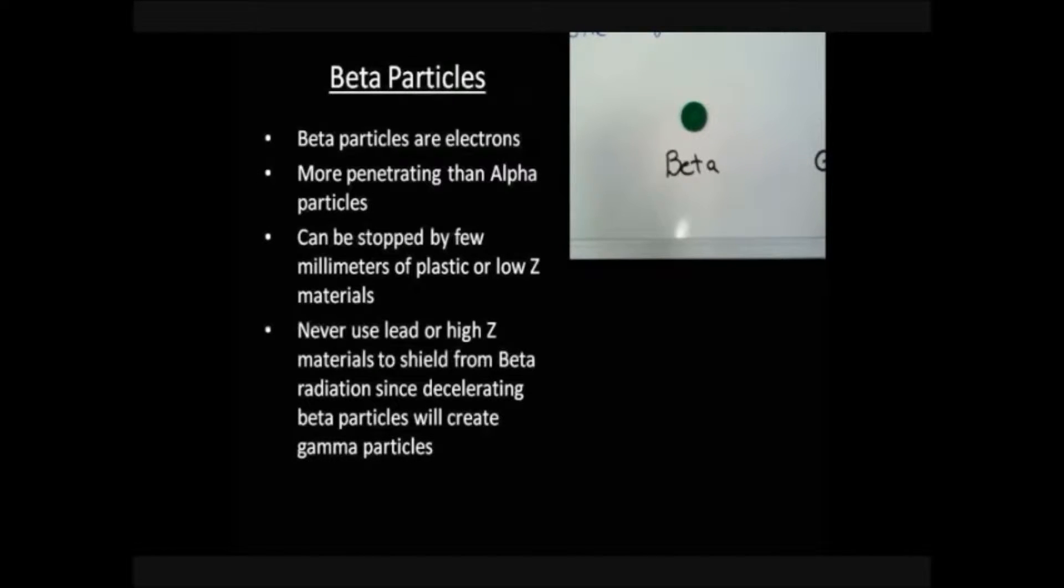Beta particles are more penetrating than alpha particles and can be stopped by a few millimeters of plastic or low-Z materials. Lead, or any other high-Z material, should never be used to shield betas, as the beta particle, while slowing down, will emit Bremsstrahlung radiation, which is essentially gamma radiation. From a beta being improperly shielded, you could create a gamma hazard which requires different shielding material.